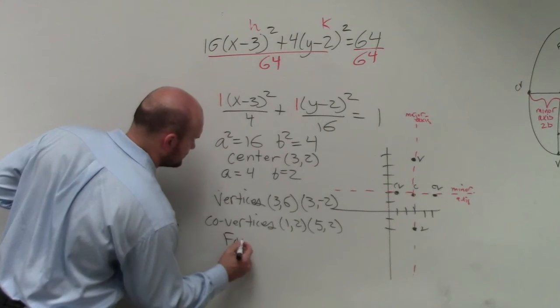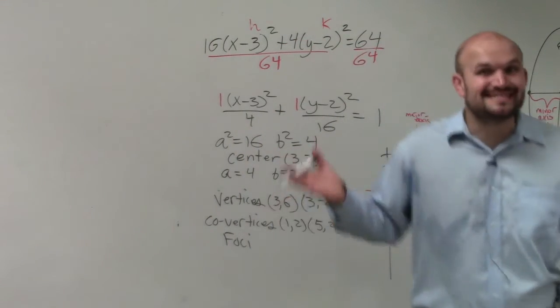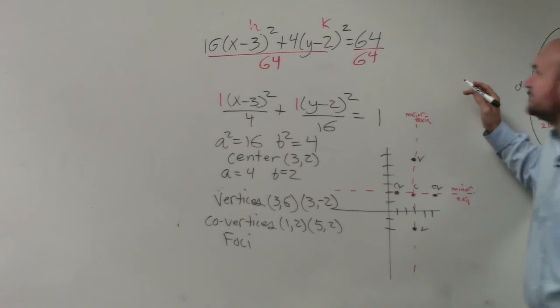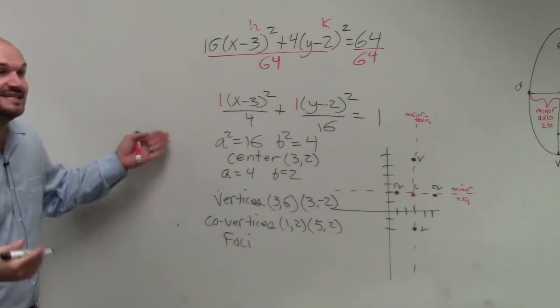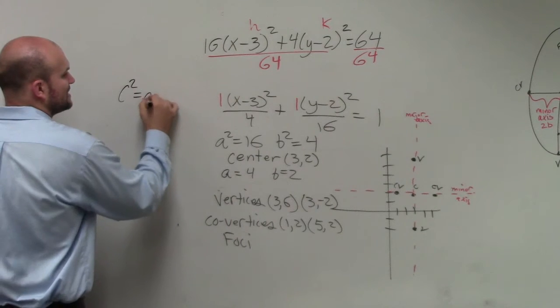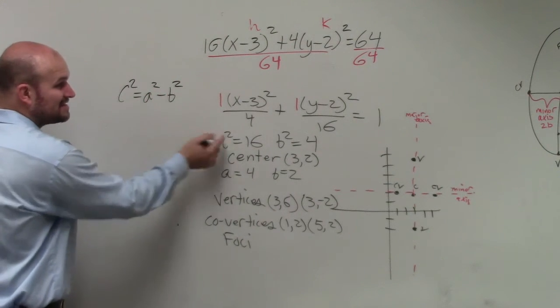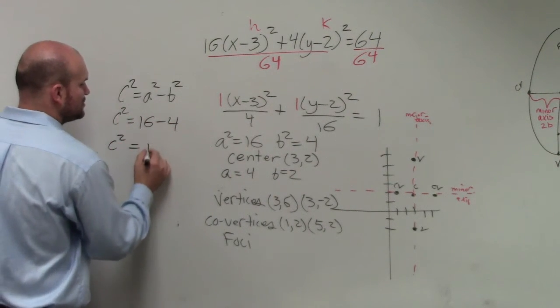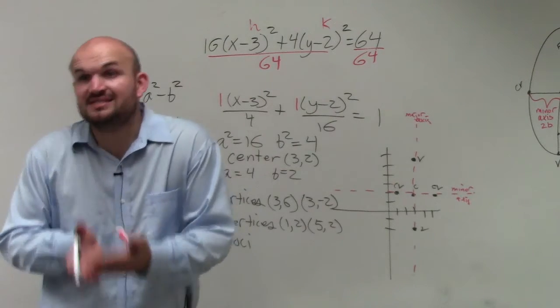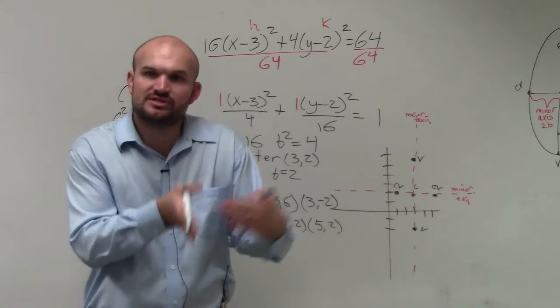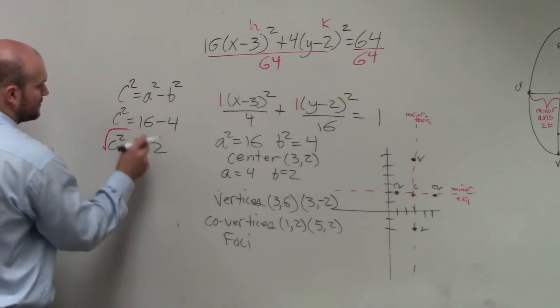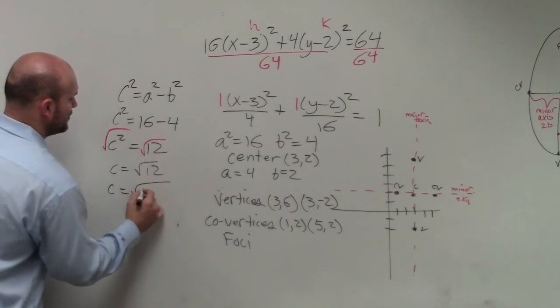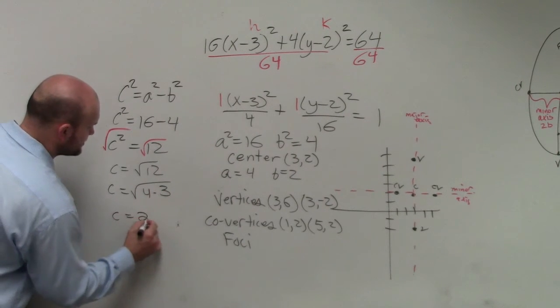Last one is the foci. For the foci, we have to figure out what c is. The relationship between them is c squared equals a squared minus b squared. I already have a squared and b squared, so c squared equals 16 minus 4. C squared equals 12. I need to find c because c is the distance from the center to the foci. Taking the square root of both sides, c equals the square root of 12, which we can simplify to 2 radical 3.